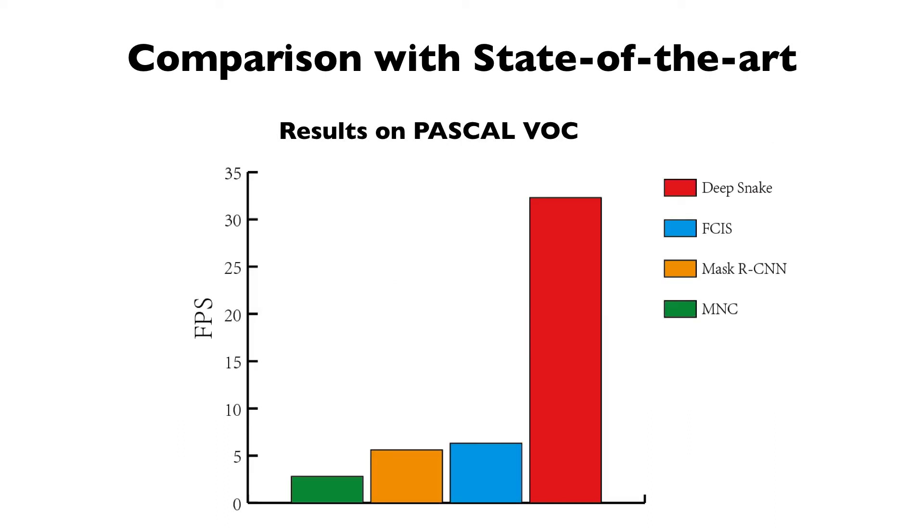On Pascal VOC, DeepSnake obtains real-time performance, which is much faster than Mask R-CNN.